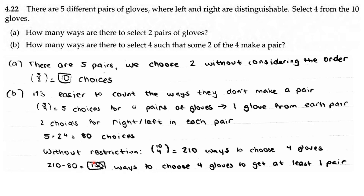In total without the restriction, there's 10 choose 4 because there are 10 gloves and you choose 4, which equals 210 ways to choose 4 gloves. Since we have to find the ways that some 2 of the 4 make a pair, we subtract 80 from 210, so there are 130 ways to choose 4 gloves that have at least 1 pair.